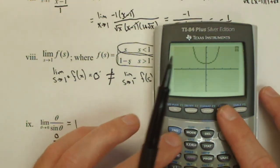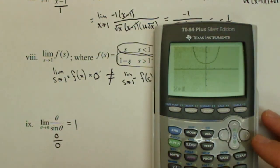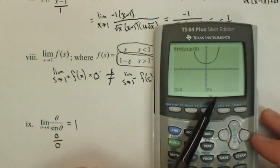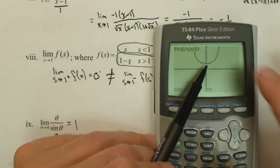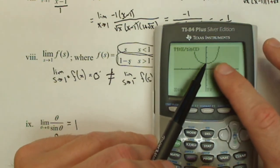Now, that doesn't mean this thing exists at 0. If I calculate the value at 0, there is no y value because we're getting 0 over 0. But as I approach from the left and the right, I'm going to the same place, which is a y value of 1.